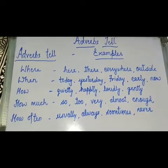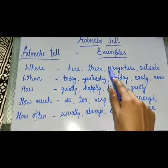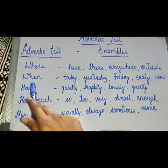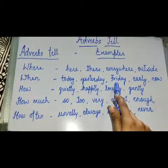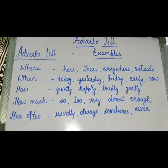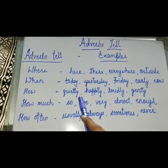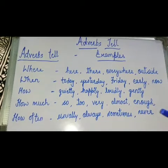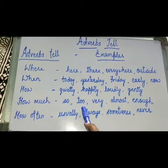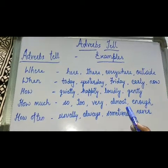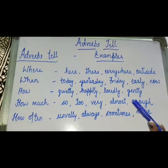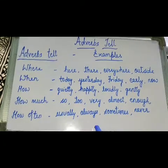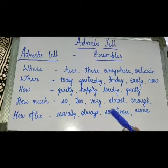Now let's see some more examples. Where: here, there, everywhere, outside — these are all examples of where an action is done. When: today, yesterday, Friday, early, now — all examples of when an action is done. How: quietly, happily, loudly, gently — all examples of how an action is done. How much: so, too, very, almost, enough — all examples of how much. How often: usually, always, sometimes — adverbs which tell how often something occurs.